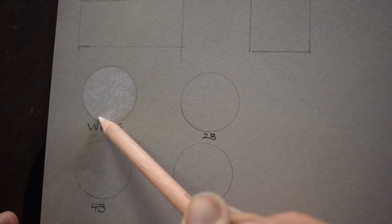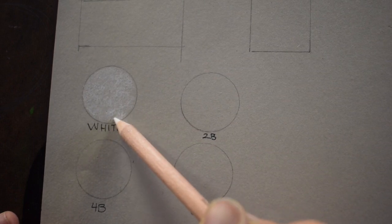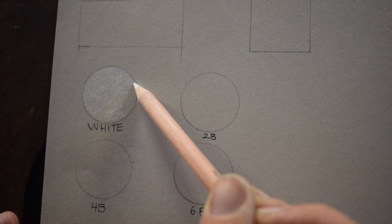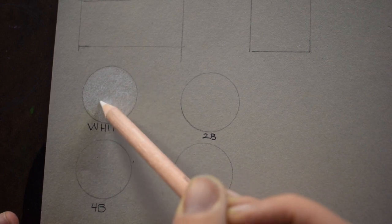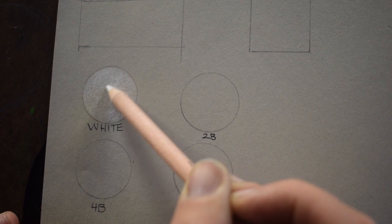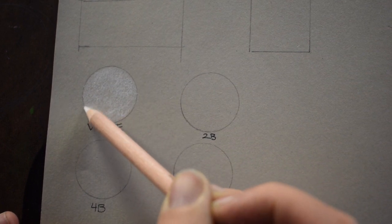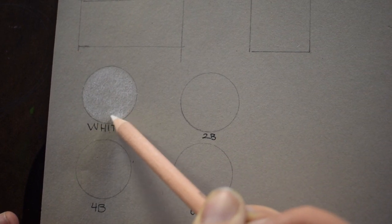If it goes outside of the frame, outside of the circle, that's okay, it's fine. You could also, if you're nitpicky, you can take your kneaded eraser and erase out where it goes in. You want to get a medium pressure on that white one when you're doing the white one.